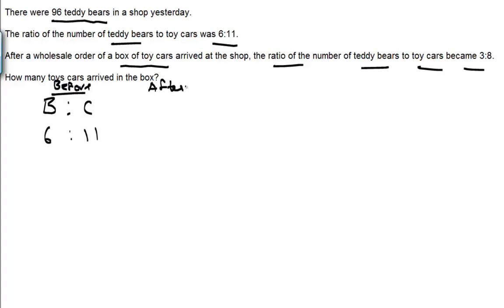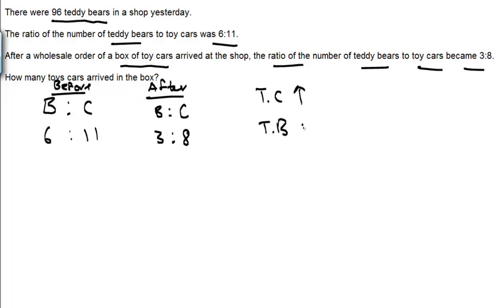As you read this, you know that a box of toy cars arrived at the shop, so the toy cars actually increased, but the teddy bears have to remain unchanged. This is how you should interpret the question. Since the teddy bears remain unchanged, the first ratio has 6 units and the second has 3 units for teddy bears.